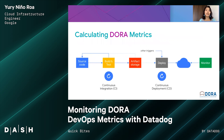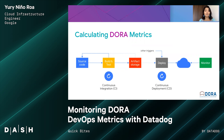These metrics can be calculated in a common CI pipeline. There are basic components in a pipeline: a source code repository in which you manage the version of your code. When you do an action here, it triggers the building and testing pipeline. This pipeline builds an artifact that is stored in a repository like Cloud Container Registry or Artifact Registry. Once we have the artifact, we can deploy it and monitor it. The question is: how do we automate the calculation of these metrics?